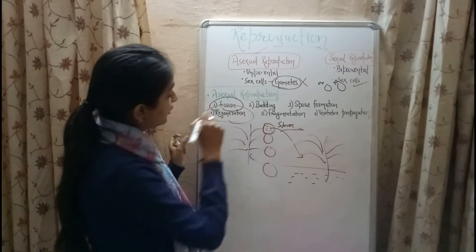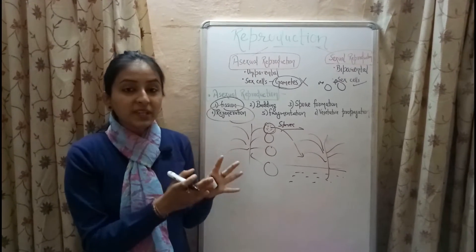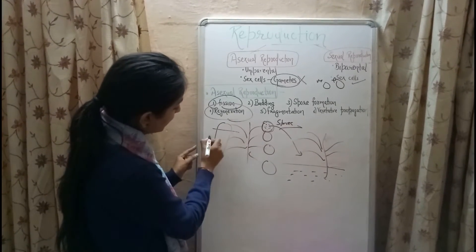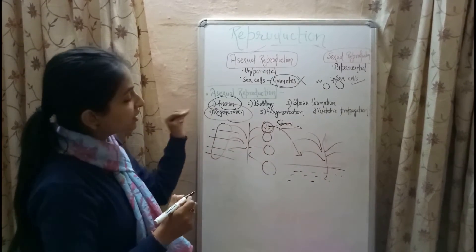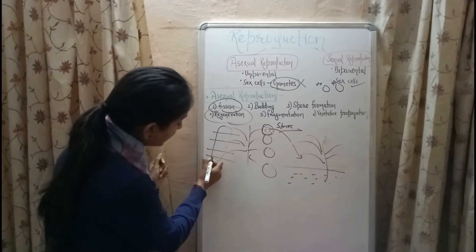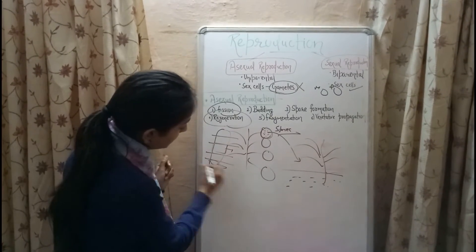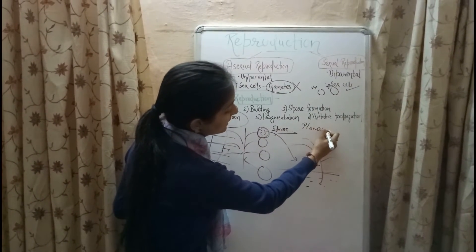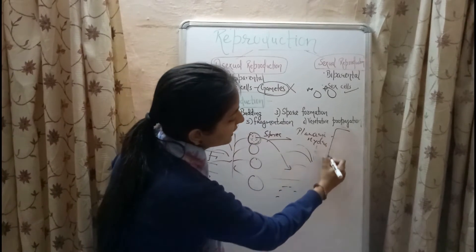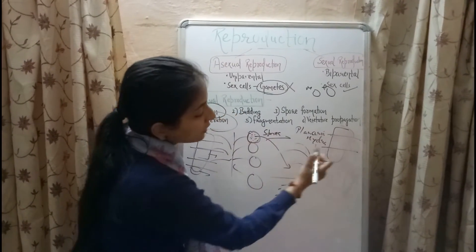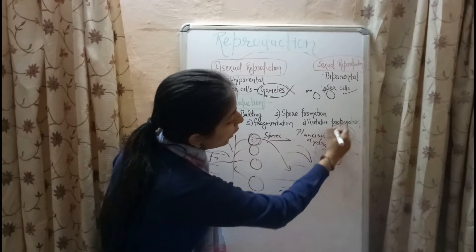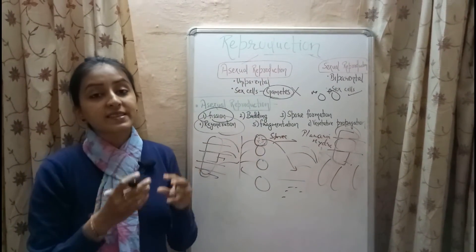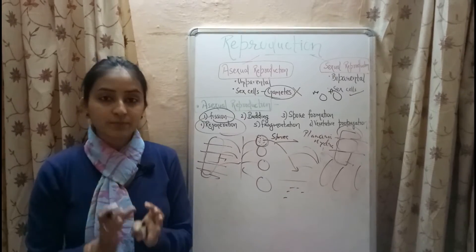Next is regeneration. Regeneration is the process by which the complete body of an organism can be obtained from its body parts. If you cut the body of a particular organism into several parts, by the process of regeneration you are able to get a complete organism from each body part. Regeneration occurs in the flatworm called planaria and also in hydra. When you cut the body of planaria into three parts, all three parts have the capacity to grow into a new organism.